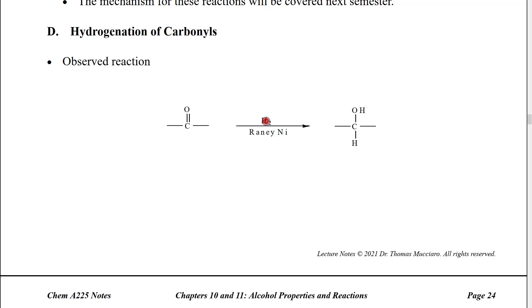So we can use hydrogen gas with an appropriate metal catalyst. In this case, we use the catalyst Raney nickel, which is essentially a solid nickel surface that's been treated. Essentially, you can just write Raney nickel.